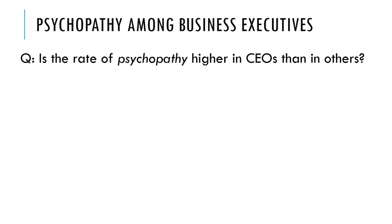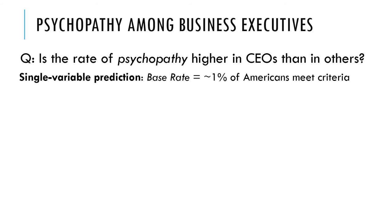Here's another example: psychopathy and business executives. Is the rate of psychopathy higher in CEOs of corporations than in other people? Psychopathy is a pattern of cold, callous, non-empathic relating to other people. Robert Hare, who has done the best psychopathy research for the past 20 or 30 years, reports that the base rate of extreme psychopathy — scoring above a certain cutoff on his PCL-R psychopathy measure — is about 1% of Americans.